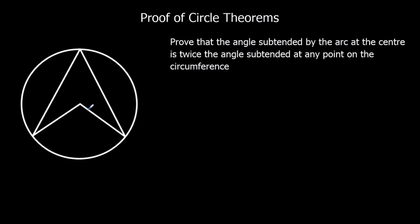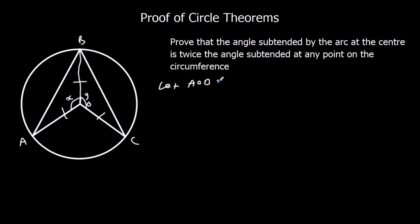The first step is to draw a straight line. Let's label the points: A, B, C and O in the middle. We're going to draw a straight line that connects O to B. What we've got now is three radii, all the same length. We're going to label angle AOB as X, and angle BOC as Y.